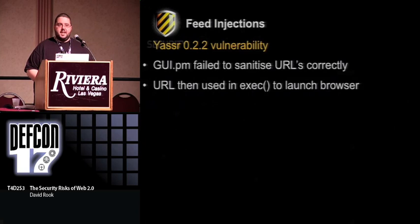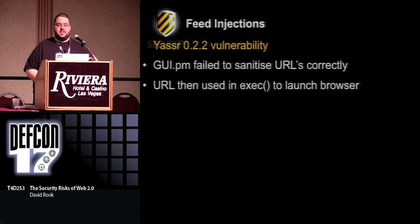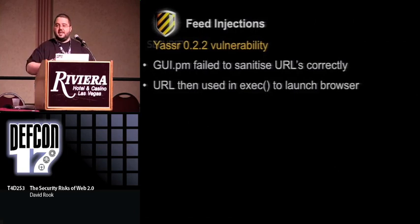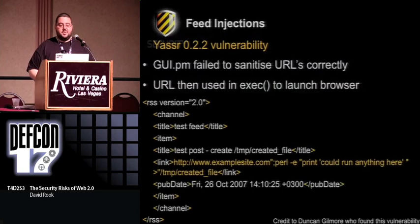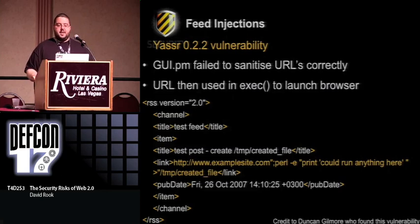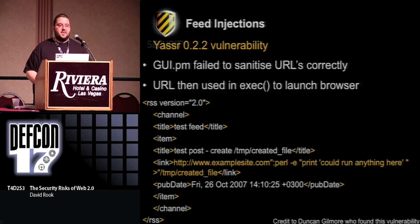A real-world vulnerability in a local zone reader called YASA: part of this application was called GUI.pm. When this presentation goes online, I've got all the code in the notes if you want to see the vulnerability. Basically it took in the URL, and when you wanted to view it, it put it into an exec statement and launched the browser without doing any validation on the URL. The researcher figured out he could pass in the link, put his semicolon at the end, and do a Perl -e with whatever he wanted. There's nothing really complicated about that attack — it just shows lack of validation allows him to do essentially whatever he wanted on the system.